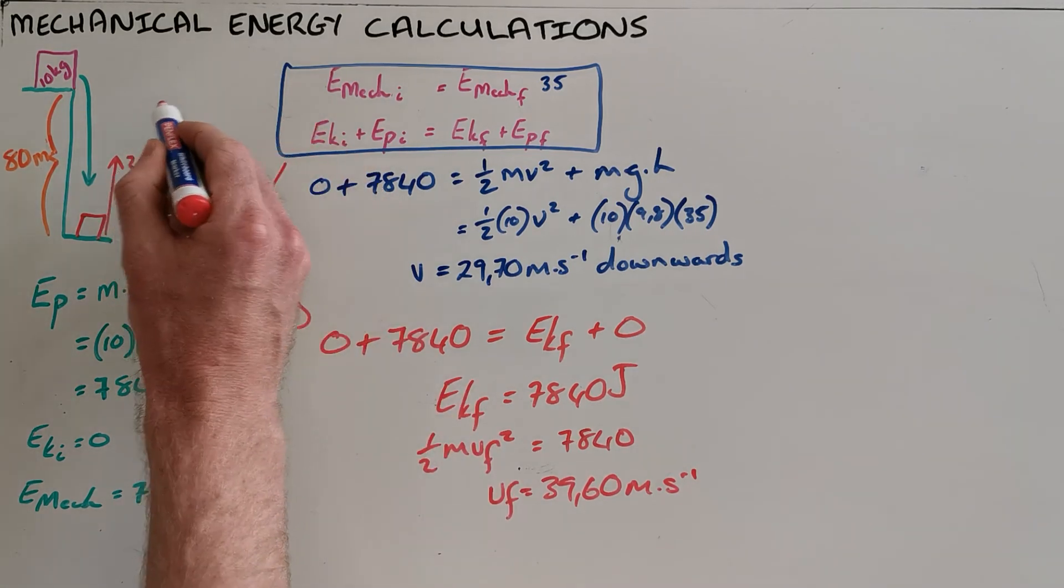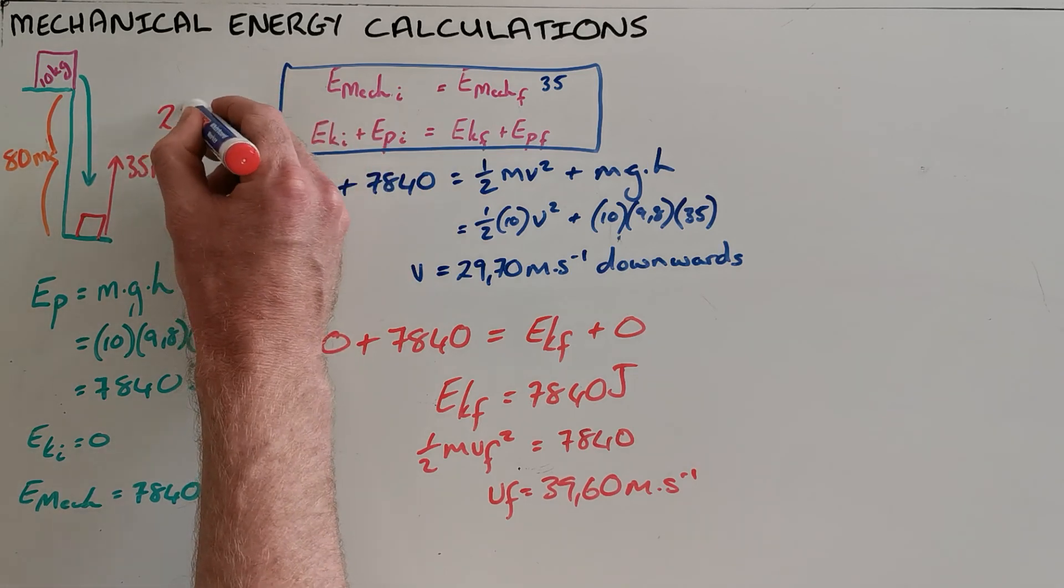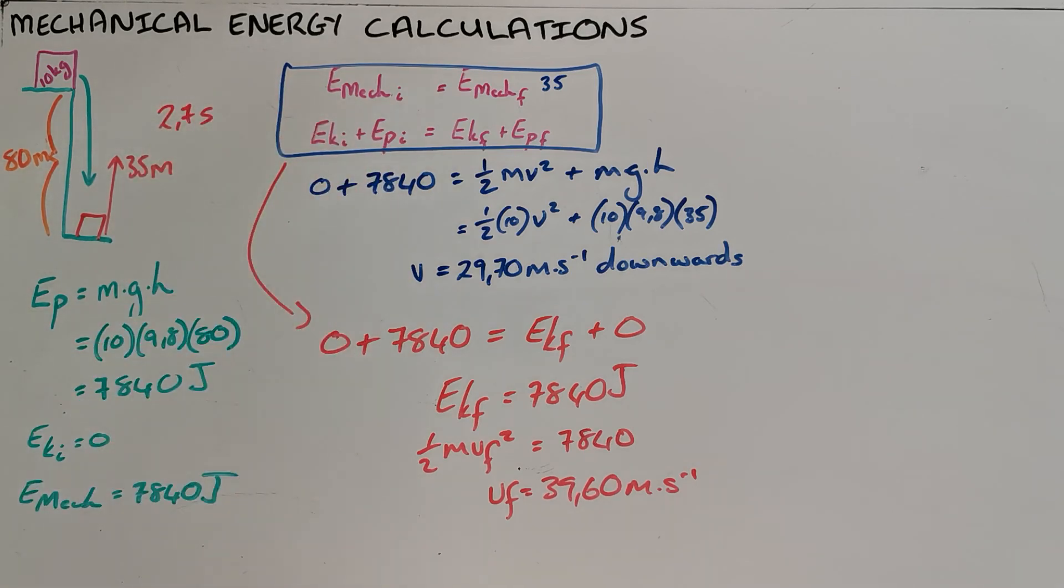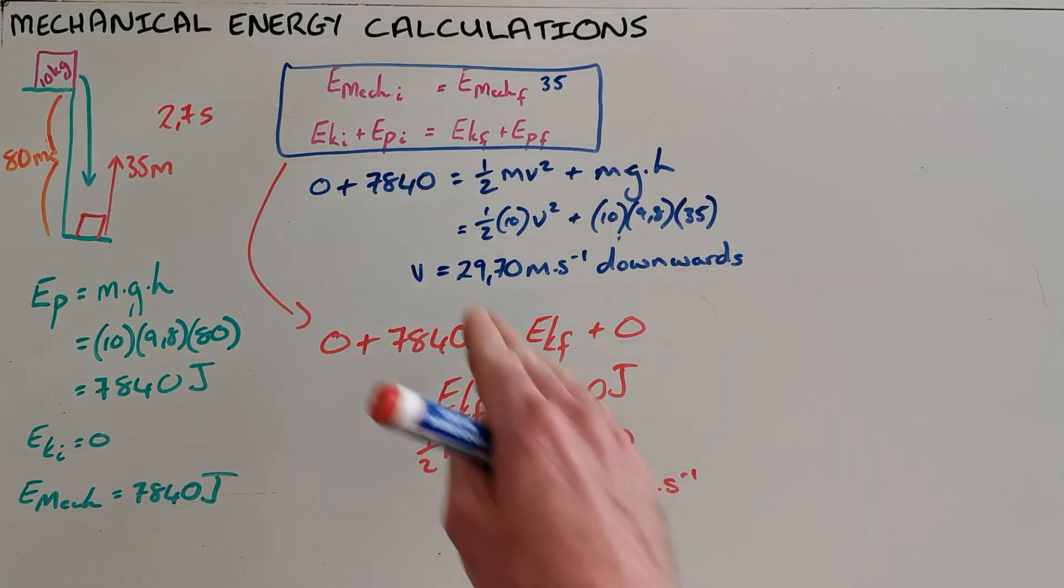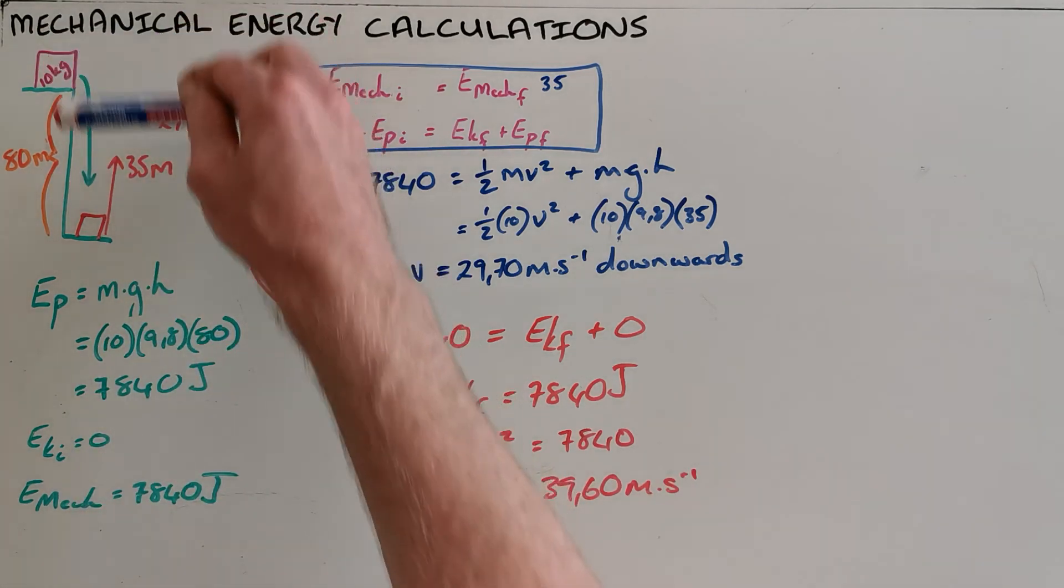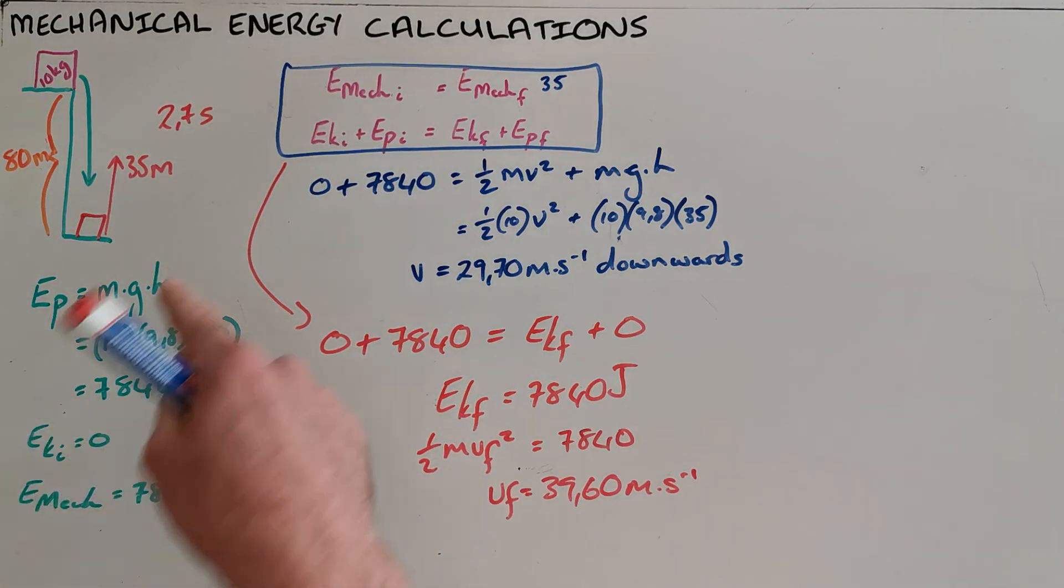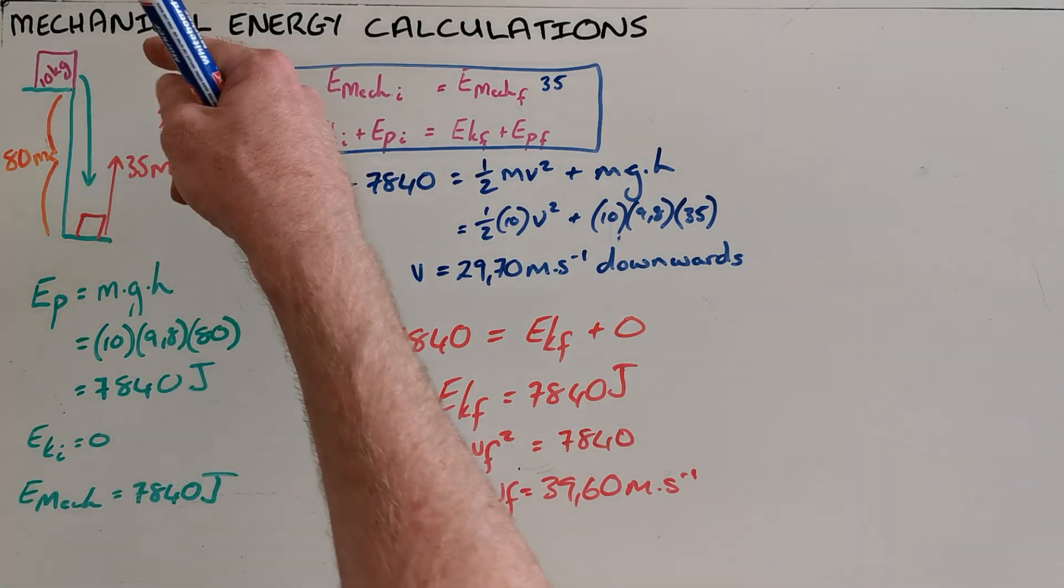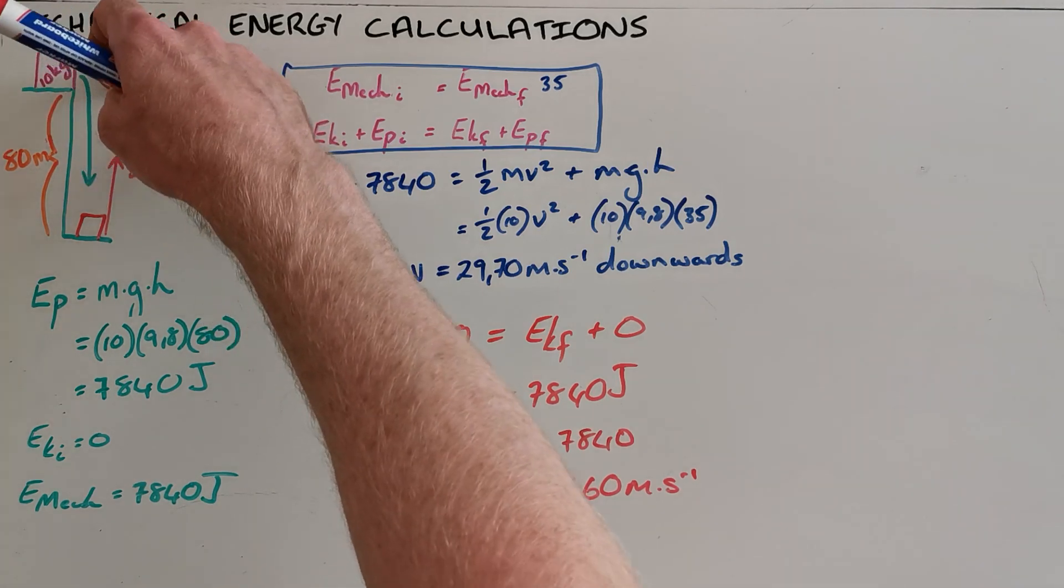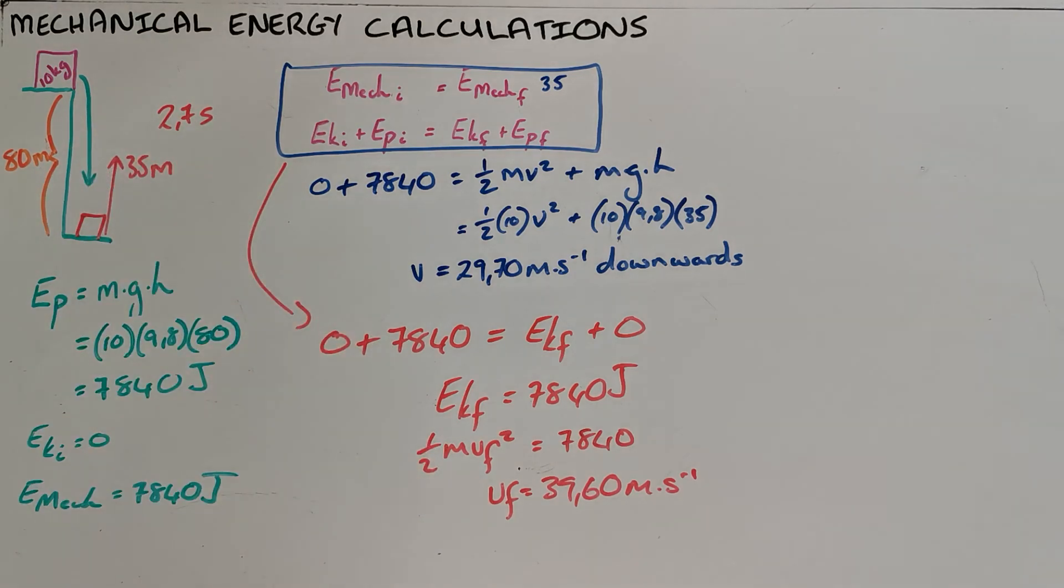There can also be all sorts of other questions, for example what is the mechanical energy at a point or at a certain point in time, say 2.7 seconds after it has started falling. Once again, as long as there is no friction on this object we know that the mechanical energy must be conserved, and so the mechanical energy from the first point until the very last point is 7840 joules. All that changes is that mechanical energy in the form of potential energy at the top is converted into kinetic energy as it falls while the mechanical energy decreases as there's less distance left to fall.